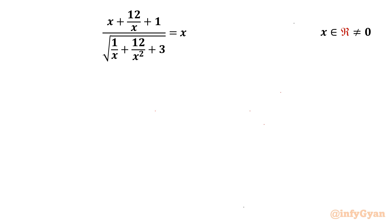Welcome back to Infigr my dear friends. Today in this video we are going to take up another challenging question from radical equations. The given equation is x plus 12 over x plus 1 over 1 over x plus 12 over x squared plus 3 equal to x. x belongs to real numbers and x cannot be equal to 0, as we have x in the denominators.